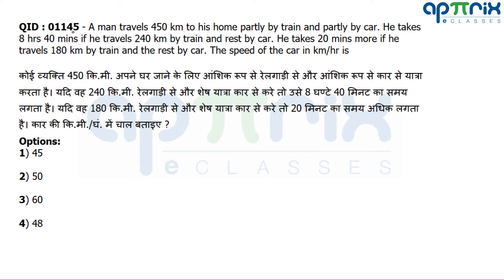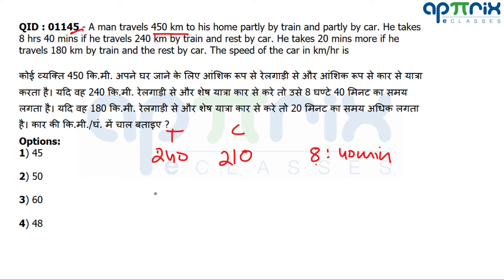Question number 1145: A man is traveling 450 kilometers partly by train and partly by car. He takes 8 hours 40 minutes traveling 240 km by train and 210 km by car. He takes 20 minutes more — that is 9 hours total — if he travels 180 km by train and 270 km by car. It is better to use the options here.